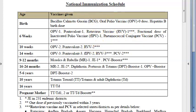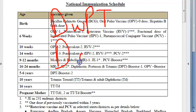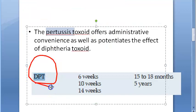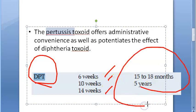Earlier we used to have DPT, which is the whole cell component of pertussis. Now there is also DaPT, the acellular component of pertussis. This is active immunization — we inject the toxoid so that the body makes its own antibodies. The schedule is 6 weeks, 10 weeks, 14 weeks, with boosters around one and a half years and five years.